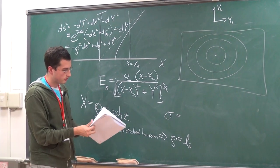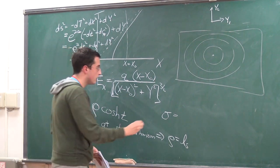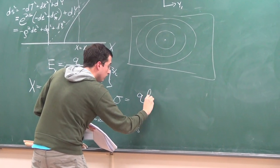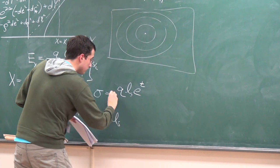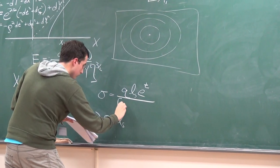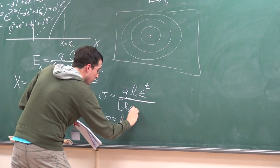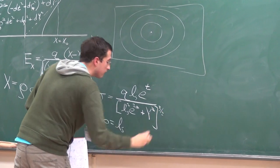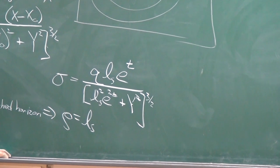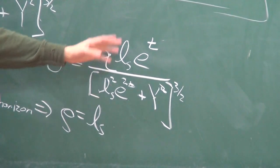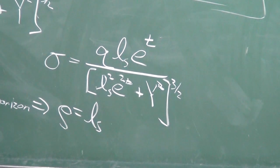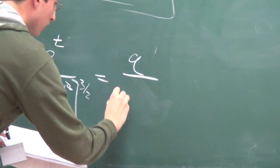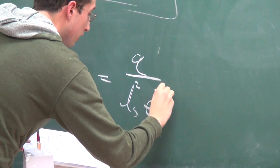If I plug this in and skip to the answer, I find that the surface charge density looks like Q times L-String times e to the T over L-String, raised to certain powers. And if I rearrange this one more time, it becomes Q over L-String squared times e to the T.